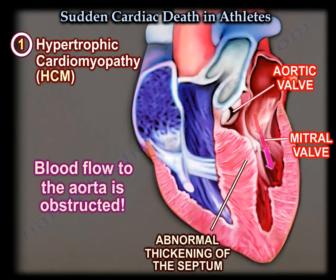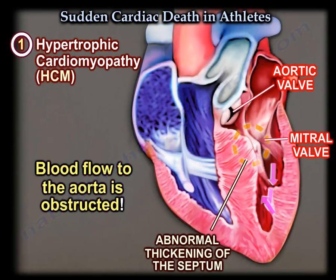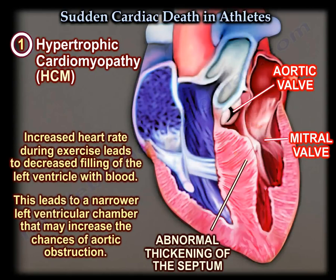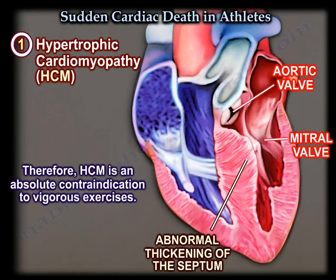The blood flow to the aorta is obstructed. Increased heart rate during exercise leads to decreased filling of the left ventricle with blood. This leads to a narrower left ventricular chamber that may increase the chances of aortic obstruction. Therefore, hypertrophic cardiomyopathy is an absolute contraindication to vigorous exercise.